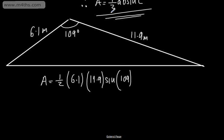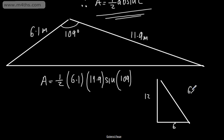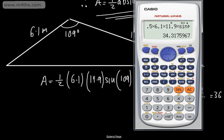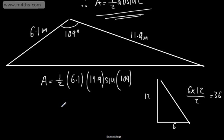If you think about this with a rough diagram — if we had a right angle with about 12 here and about 6 here, then 6 times 12 divided by 2 gives 36. Looking at the answer we got, 34.3, we can see that's a reasonable value for the area of that particular triangle.